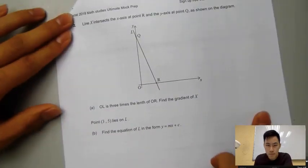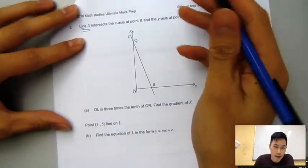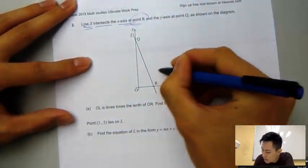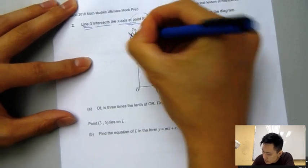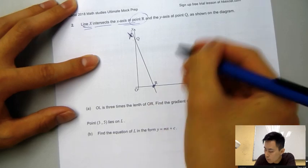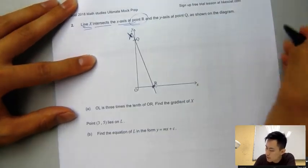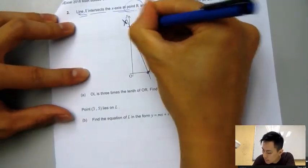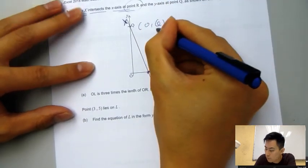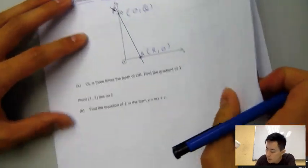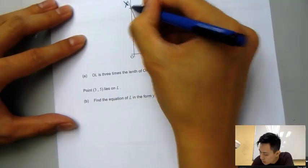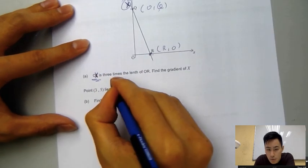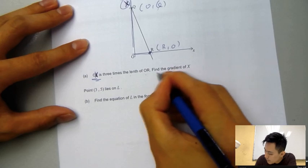Question 2 will be the coordinate geometry, finding the slope and the equation of the line. Many students get this very confusing. Line x intersects the x-axis at point R and the y-axis at point Q. All you need to know about the x-intercept is that this is R and then the y must be 0. And if we're here, the x would be 0, and we'll have the y-value because that is the y-intercept and x-intercept. OX is 3 times the length of OR, so find the gradient of x.